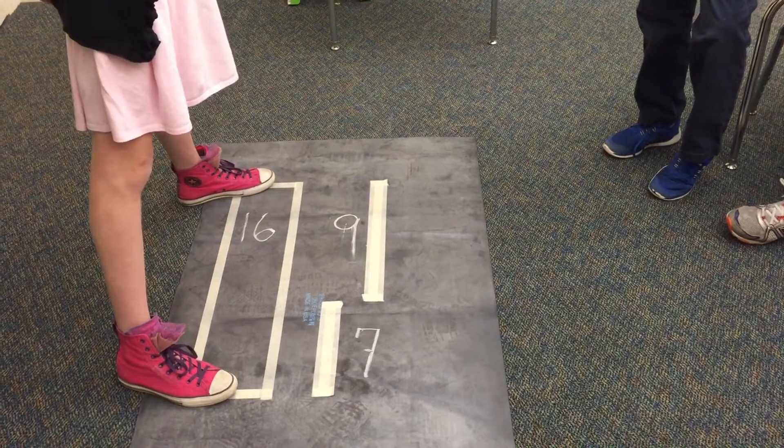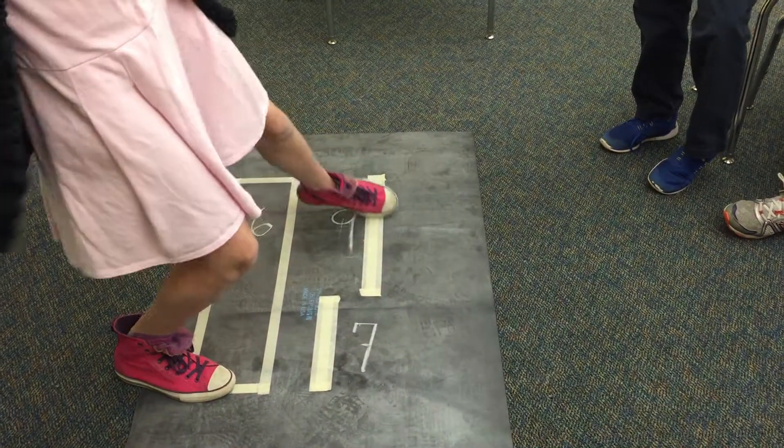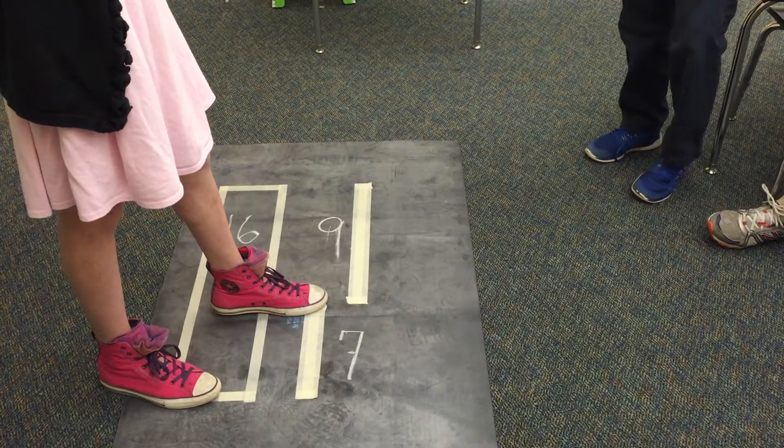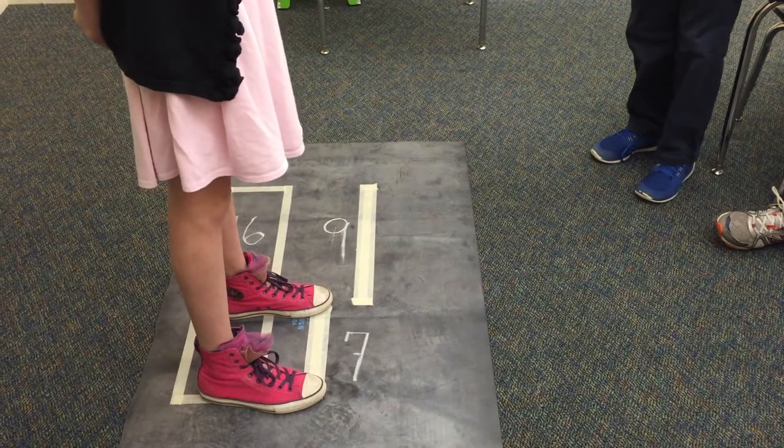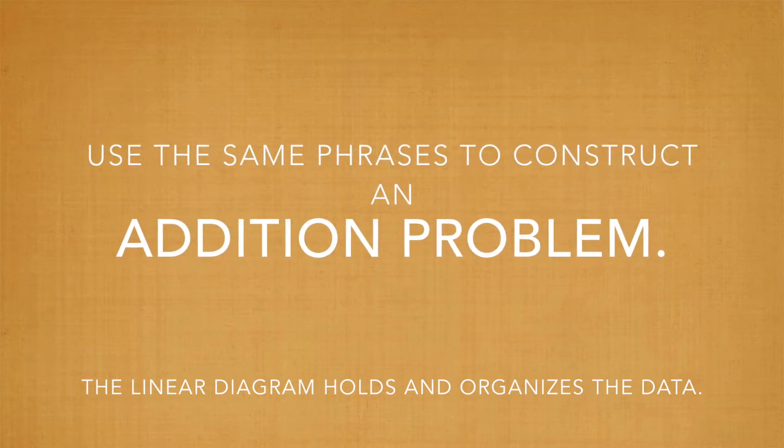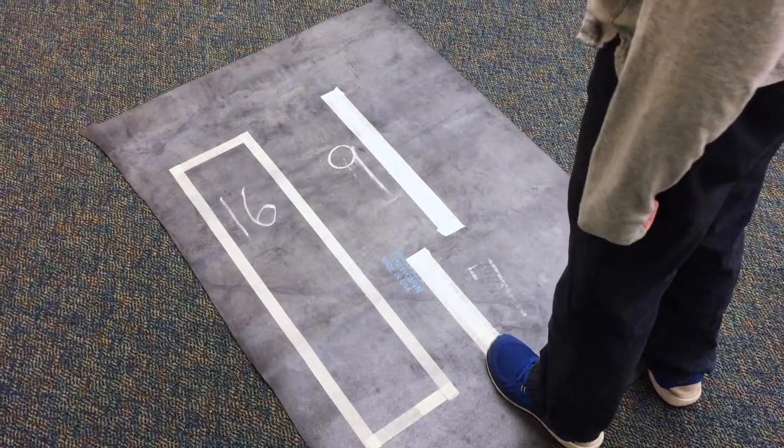I have 16 ounces of juice, I drink 9 ounces. How many ounces do I have left? 7.